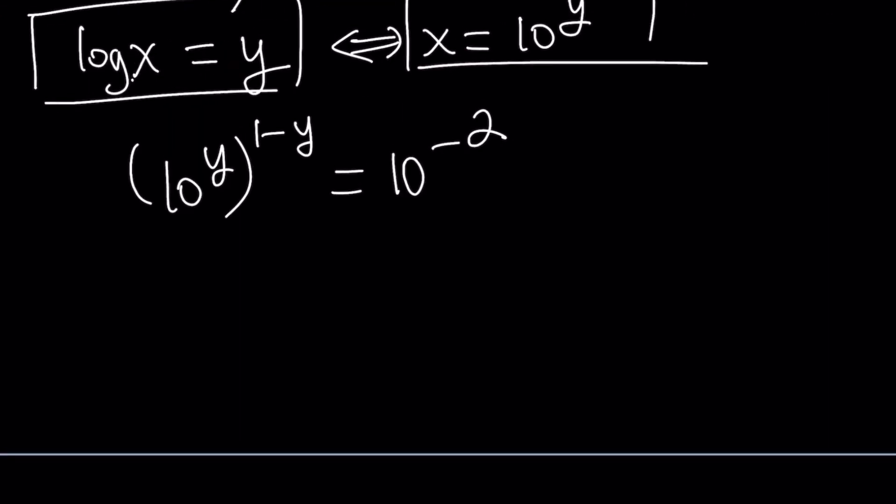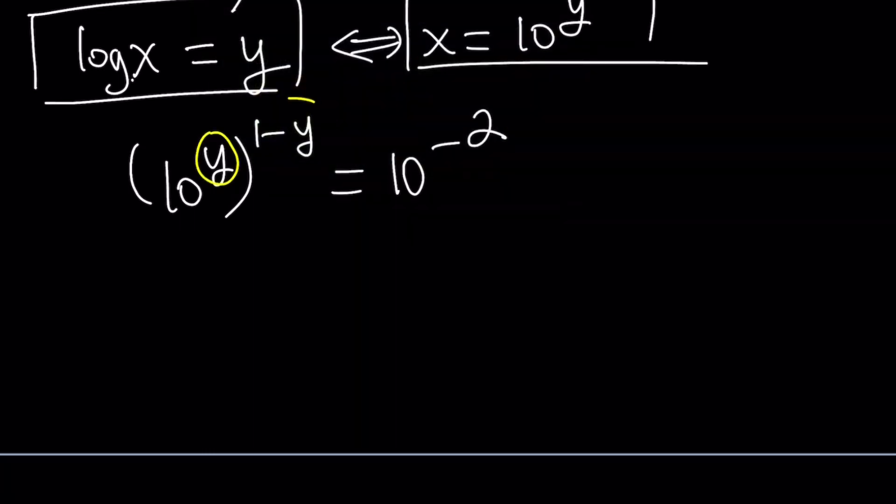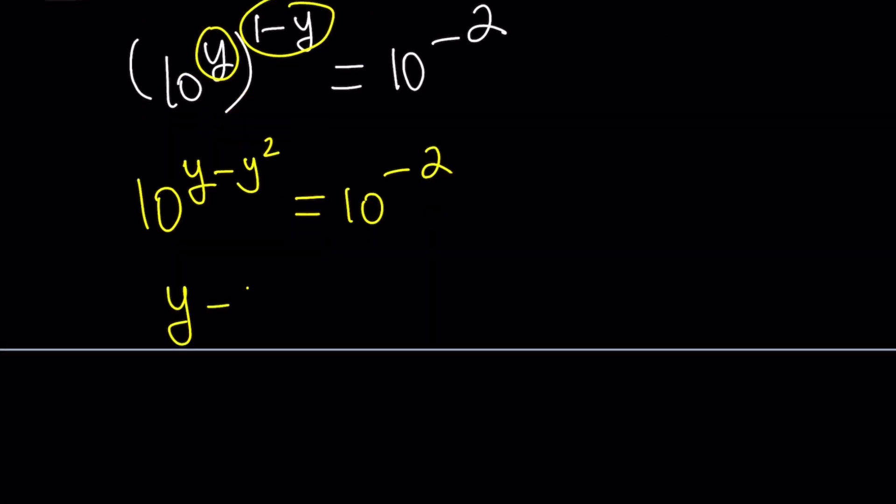So far so good. Now we're going to go ahead and use the superpower property, or the power of power property on the left-hand side. And we'll go from there. These two exponents are supposed to be multiplied, which gives us 10 to the power y minus y squared equals 10 to the power negative 2, which gives us y minus y squared equals negative 2. Make sense? Because the bases are equal, so are the exponents.